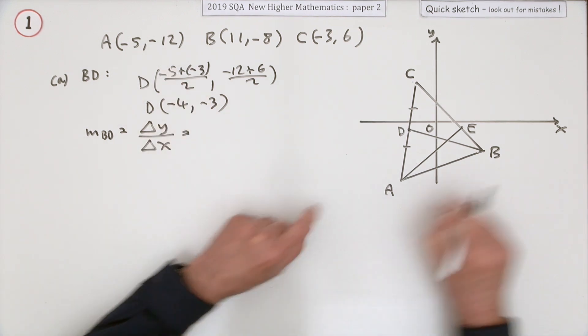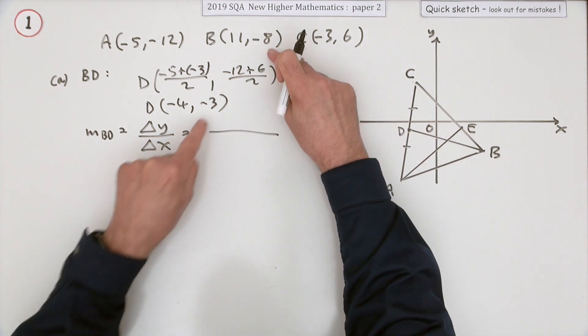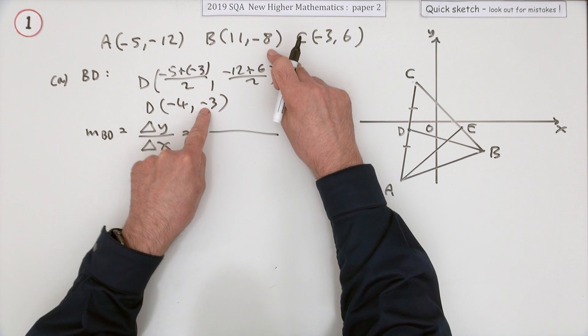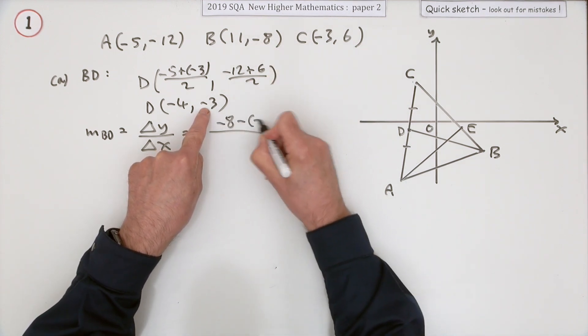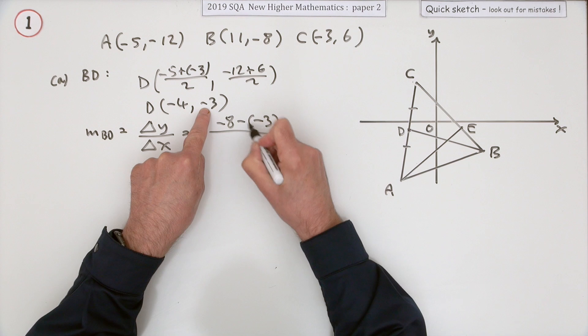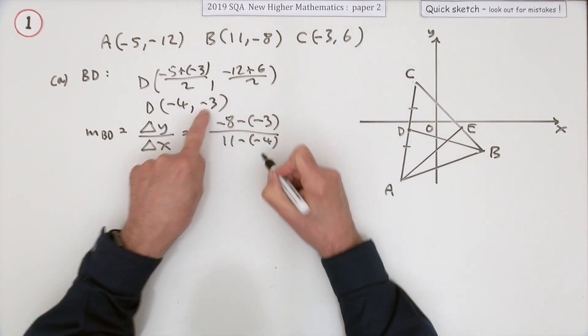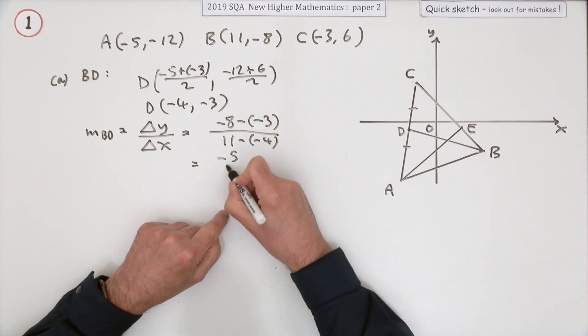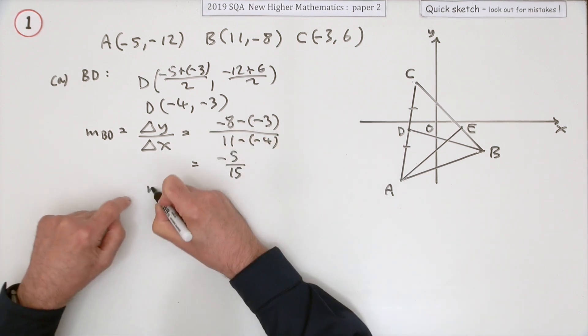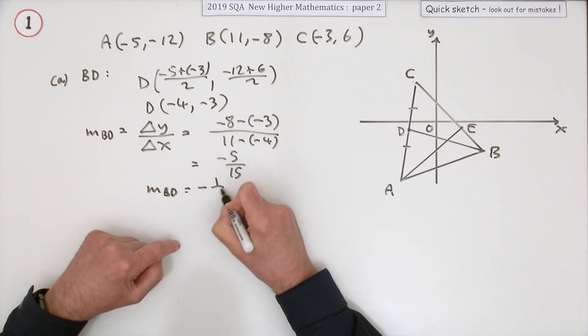Difference in the y coordinates, doing any order you like. I'll do -8 take away -3, or if you're feeling brave plus 3, take away -4. So that's -5 over 15, which means the gradient of BD is -1/3.